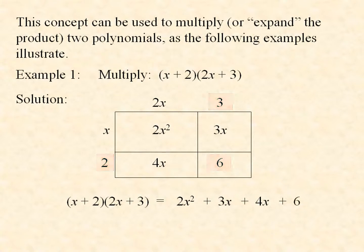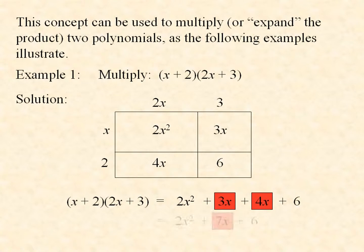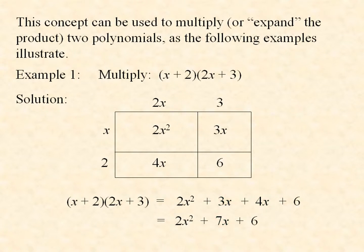This expression represents the areas of the individual rectangles added up. Notice that we have two like terms, the 3x and the 4x. They can be added to give us 7x. So the product of those two polynomials can be simplified to 2x squared plus 7x plus 6.